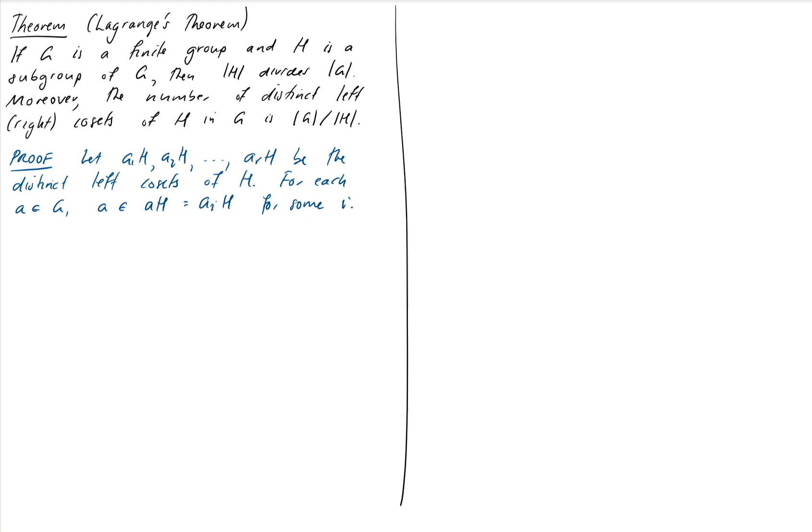Every member of the group therefore belongs to one of the cosets. We kind of knew that already because the way we defined these cosets was we built them by just taking an element and multiplying it by H. We've now established that every member of the group fits in one of the cosets.